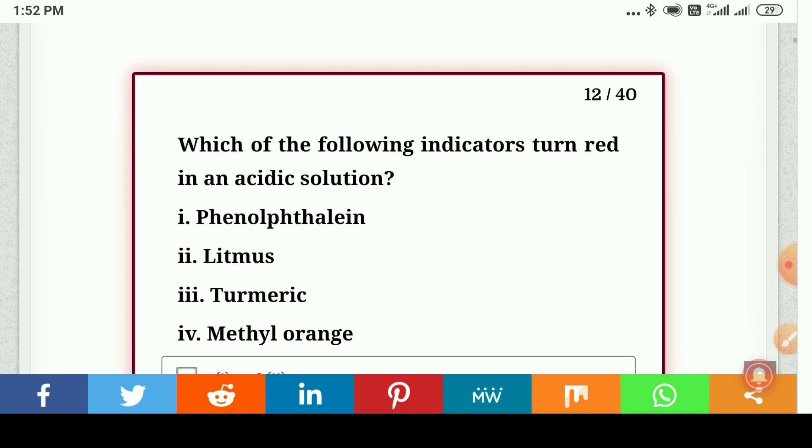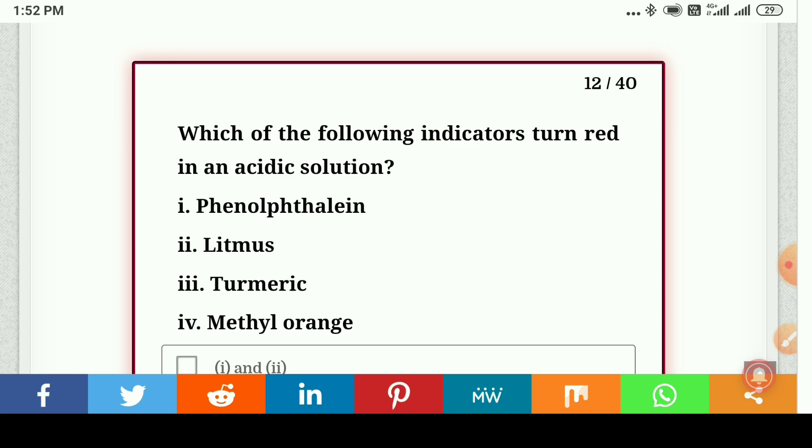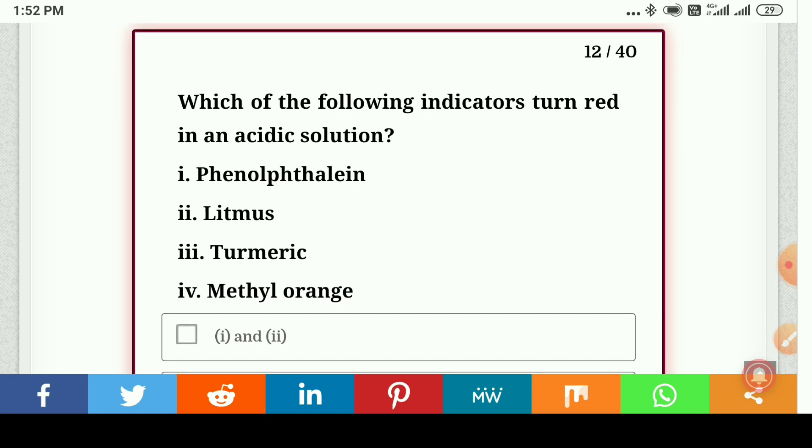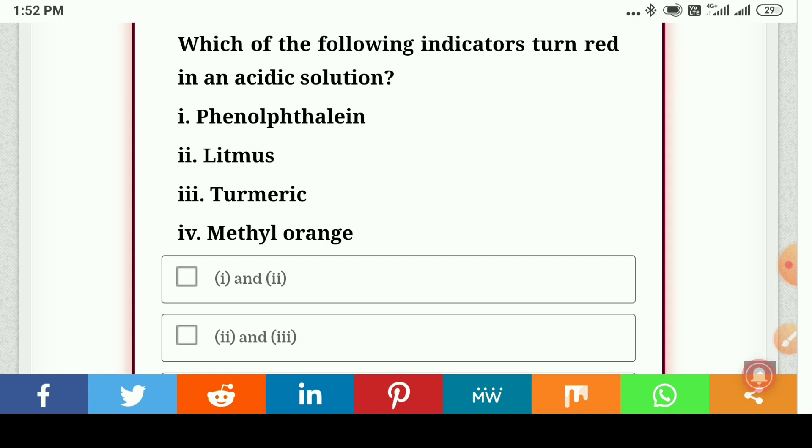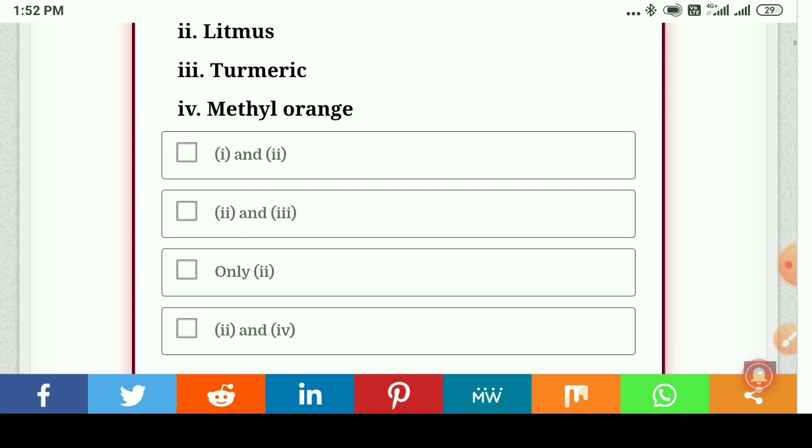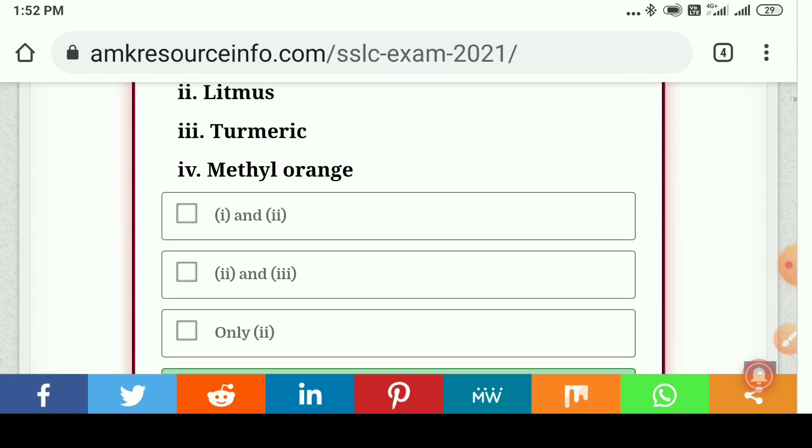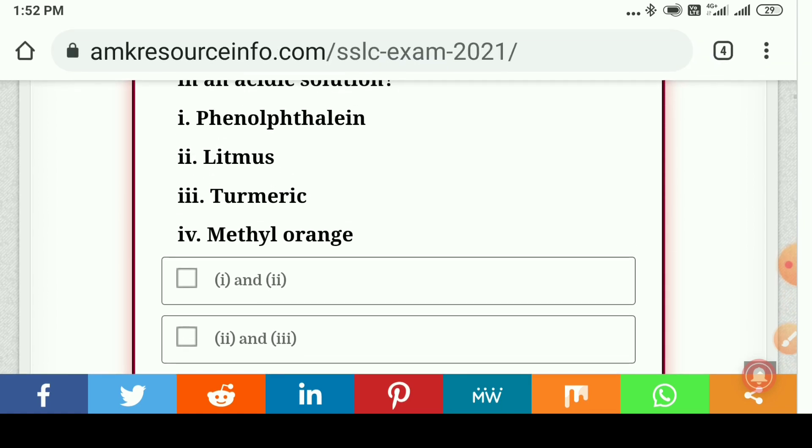Which of the following indicators turn red in acid solution: phenolphthalein, litmus, turmeric, and methyl orange? So here the answer is second and fourth is the correct answer, so litmus and methyl orange.